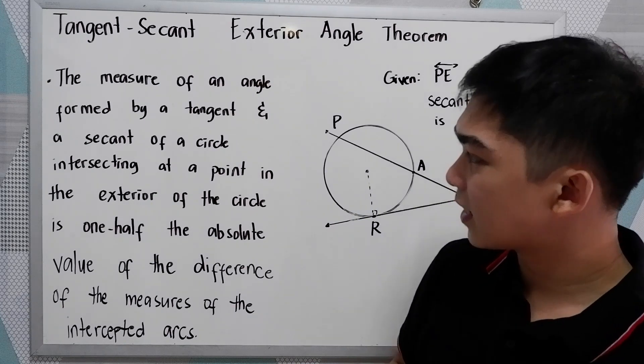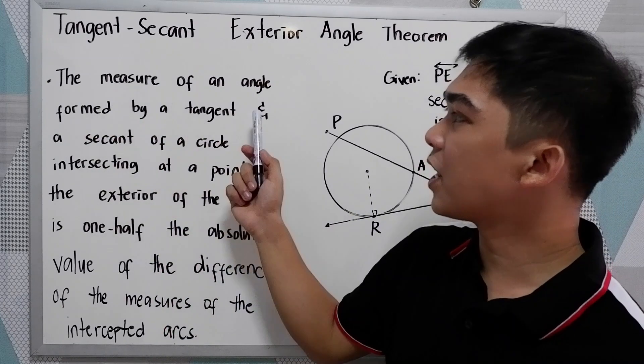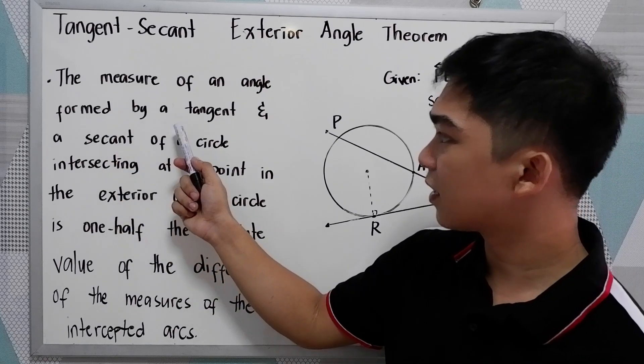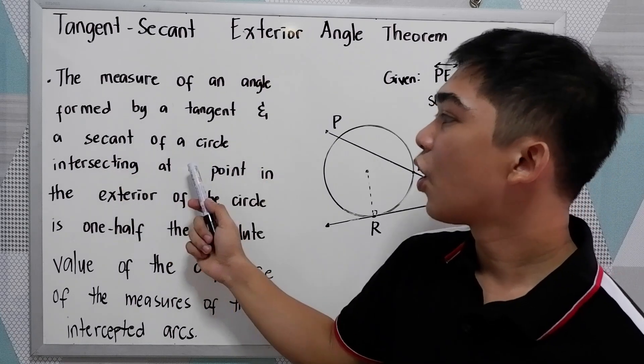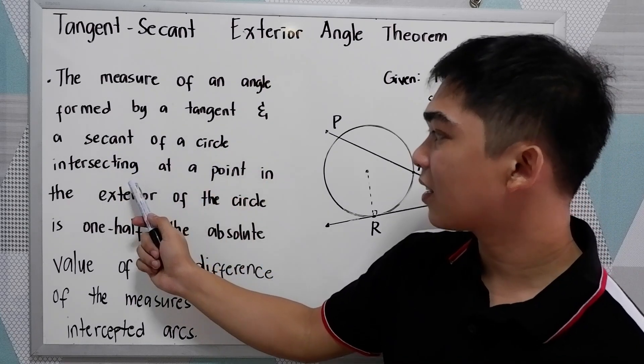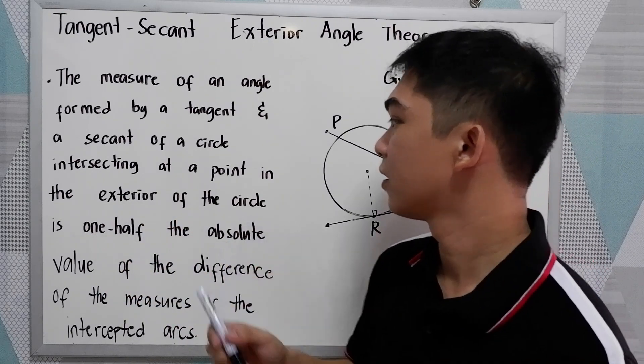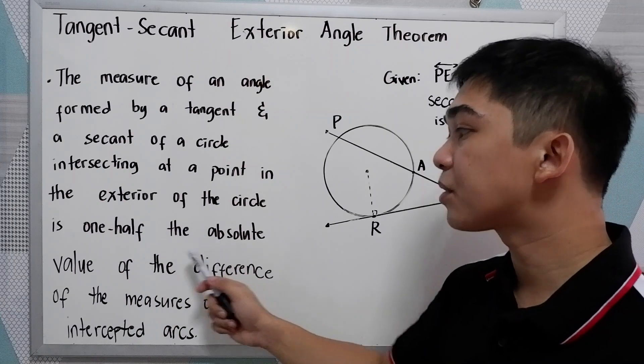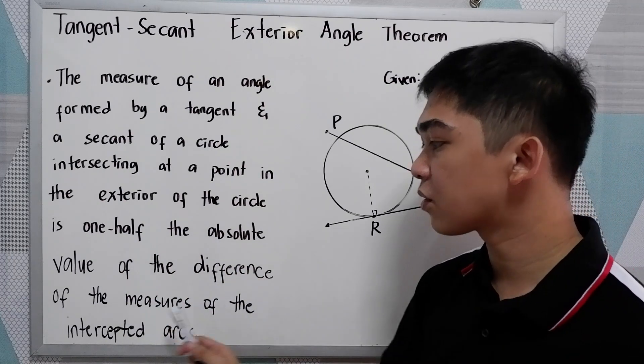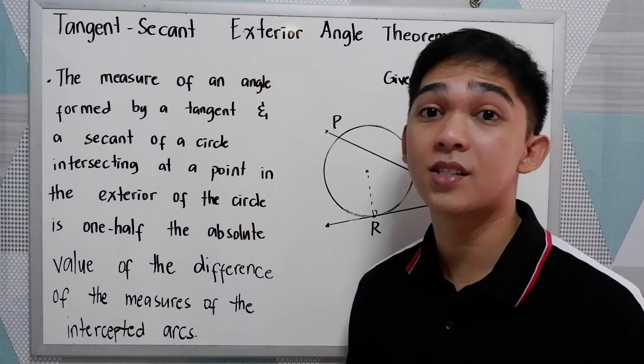So the theorem states that the measure of an angle formed by a tangent and a secant of a circle intersecting at a point in the exterior of the circle is one-half the absolute value of the difference of the measures of the intercepted arcs.